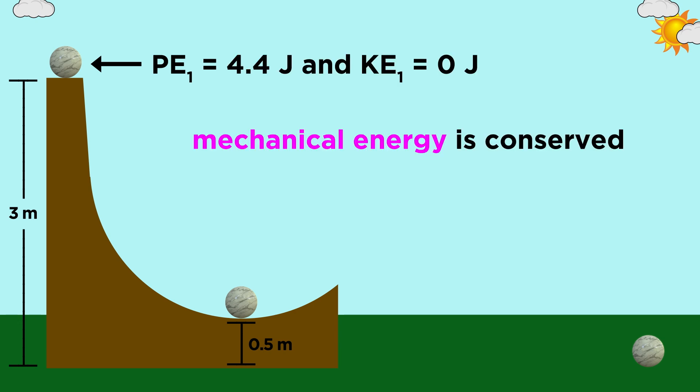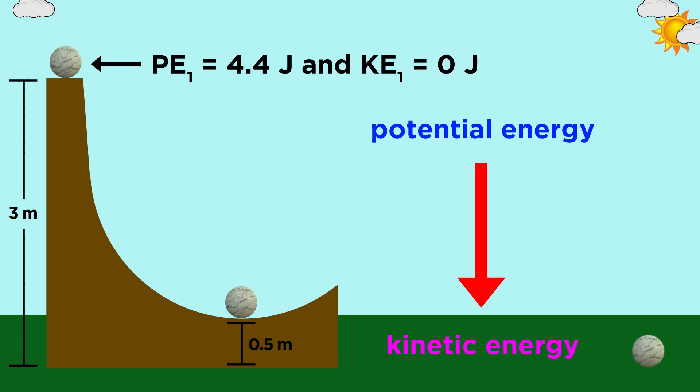Now, what we also have to understand is that as the ball moves down the ramp, the total mechanical energy is always conserved, meaning the sum of the kinetic and potential energies, in this case four point four joules, is constant. So as the ball gets closer to the ground, potential energy is being converted into kinetic energy.